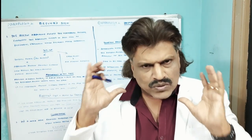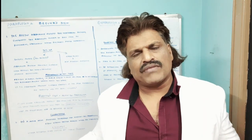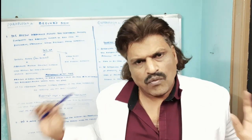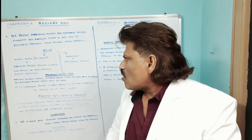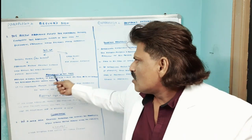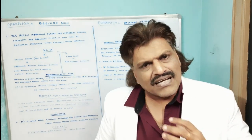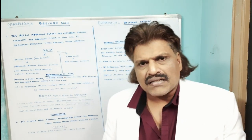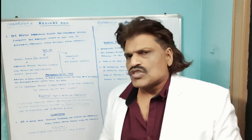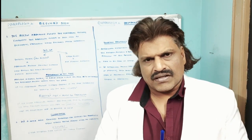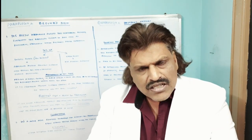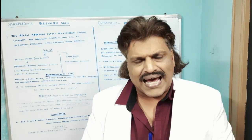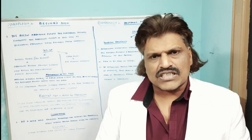What happens to the rectus abdominis when we try to sit up? When we try to sit up by flexing the neck or coming from the supine to the recumbent position without using the arms, the abdominal muscles strongly contract when raising the head and shoulders against resistance in the initial part. In the later part, the hip flexors contract.